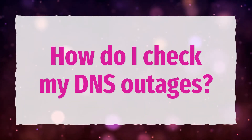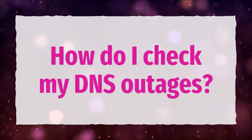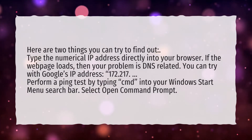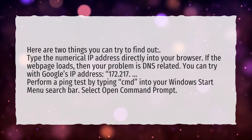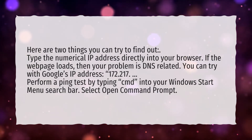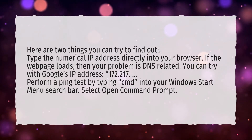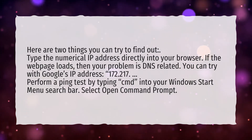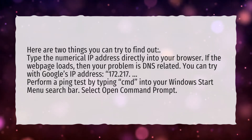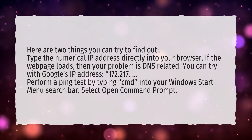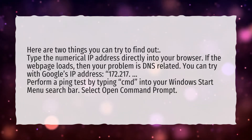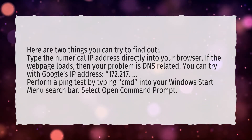How do I check my DNS outages? Here are two things you can try to find out. Type the numerical IP address directly into your browser. If the webpage loads, then your problem is DNS related. You can try with Google's IP address, 172.217. Perform a ping test by typing CMD into your Windows Start menu search bar and select Open Command Prompt.